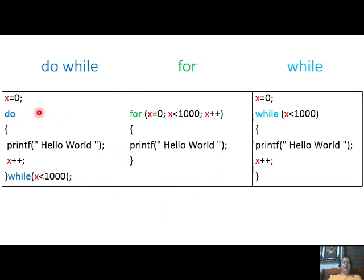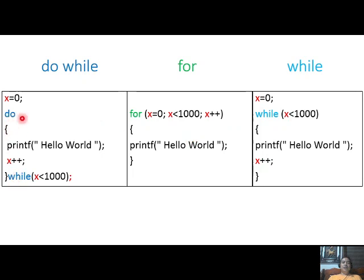In both do-while and while loops, the initial value of x is placed outside the loop. In the for loop, it is inside the parentheses. Notice that the while keyword is at the top in a while loop, but at the bottom in a do-while loop. Take note of the semicolon — that is the only structural difference.